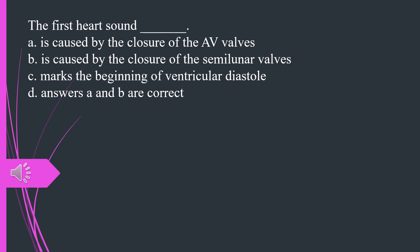The first heart sound A. Is caused by the closure of the AV valves B. Is caused by the closure of the semilunar valves C. Marks the beginning of ventricular diastole D. Answers A and B are correct. The answer is A, is caused by the closure of the AV valves.